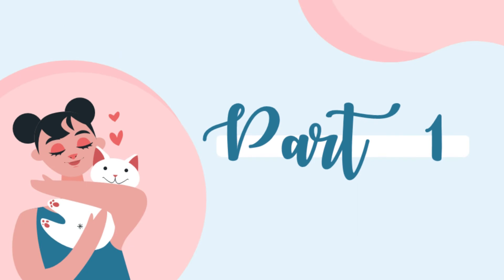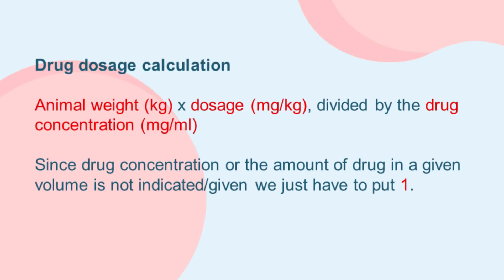Drug Dosage Calculation. We have to calculate the drug doses for the following problems. For the general formula: animal weight in kilograms times dosage in milligrams per kilogram, divided by the drug concentration in milligrams per mL. Since drug concentration — the amount of a drug in a given volume — is not indicated or given, we just have to put one.